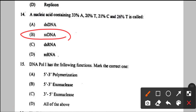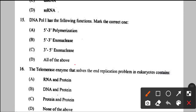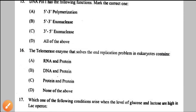Question number 15: DNA polymerase I functions — it performs polymerization in 5' to 3' direction and has both 5' to 3' and 3' to 5' exonuclease activity for editing and proofreading respectively. So the answer is option D — all of the above.